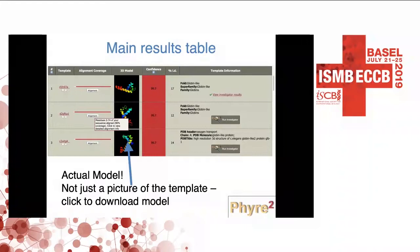This is what the main results table looks like. We have a list of often very many templates that have been identified and the region of the protein they've covered. For a fairly small protein, the top three hits may cover the entire region. You get a picture showing the model, and you can click on it — many users don't realize this — and then download the PDB coordinates for the model that has been generated.